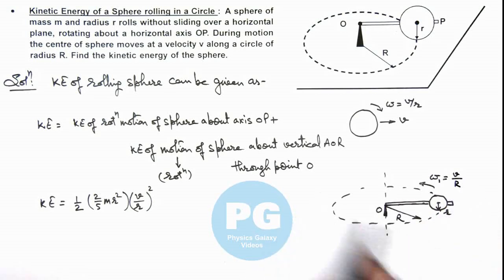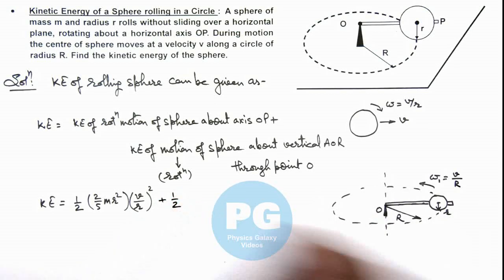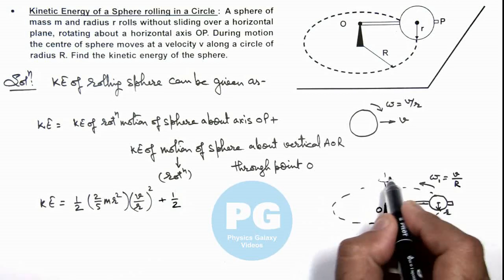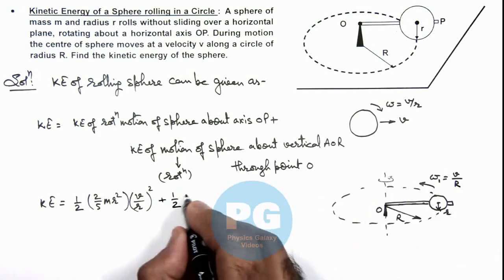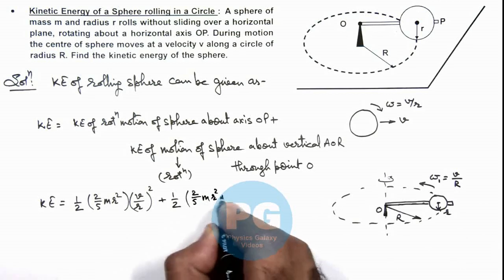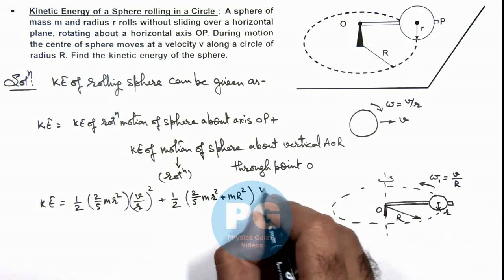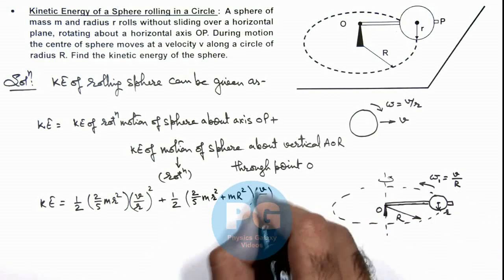So for this rotational motion, the kinetic energy we can write as half, and the moment of inertia we write about this axis of rotation, which is 2 by 5 m r square plus m capital R square, multiplied by omega square - here will be v by R whole square.